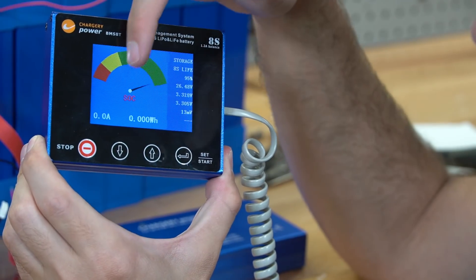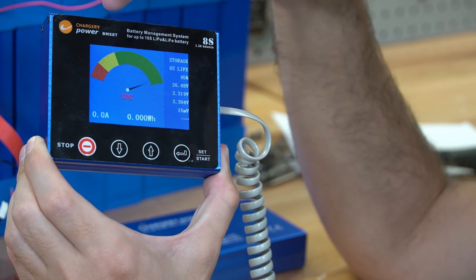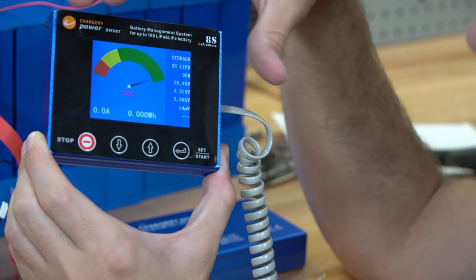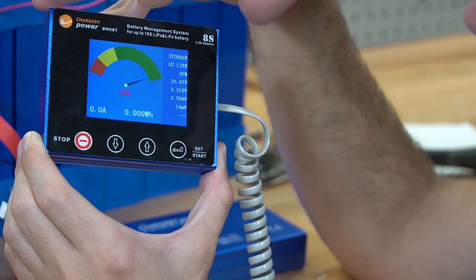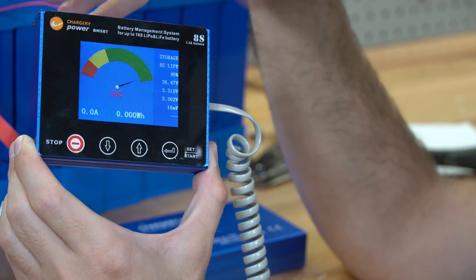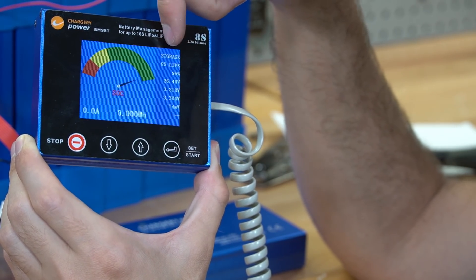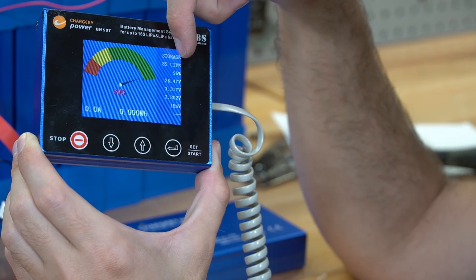On the first page we have a state of charge indicator and it shows how many amps are going in and out or the watt hours for the capacity. But we do not have the shunt set up yet so we're pretty blind right now. We still need to connect more parts of this system. But it's nice to see that the voltage is correct. We're at 26.47 and it shows 8S lithium iron phosphate.